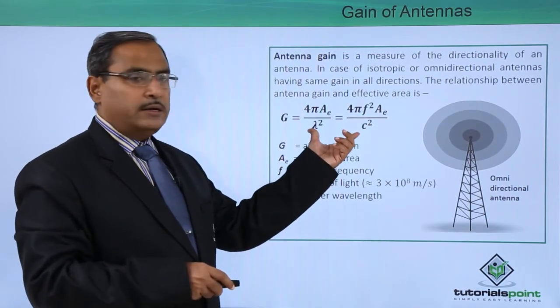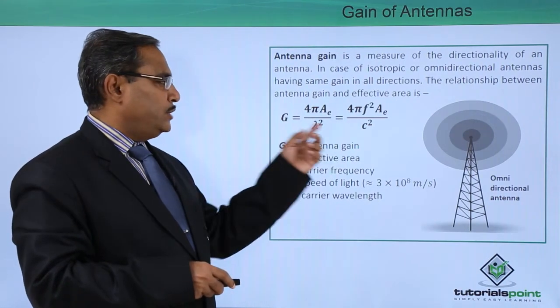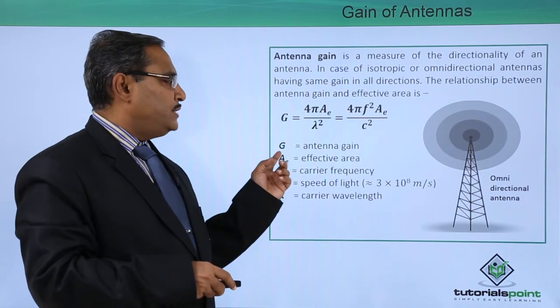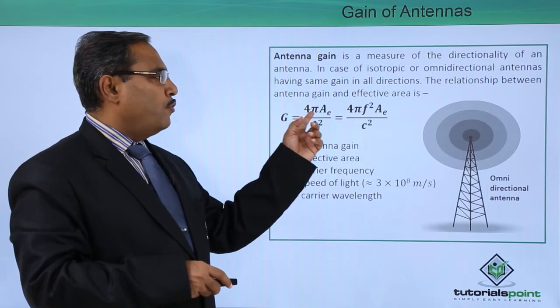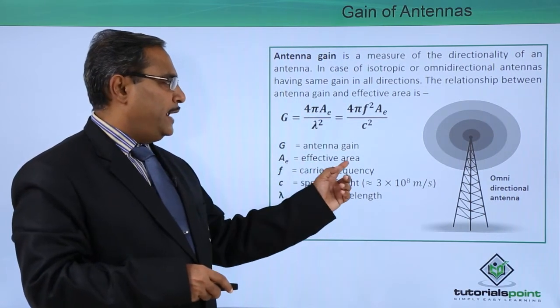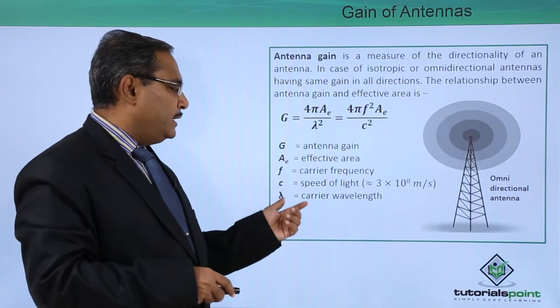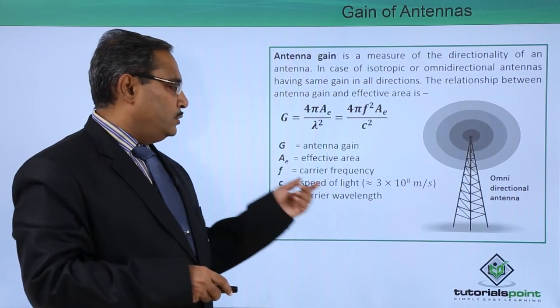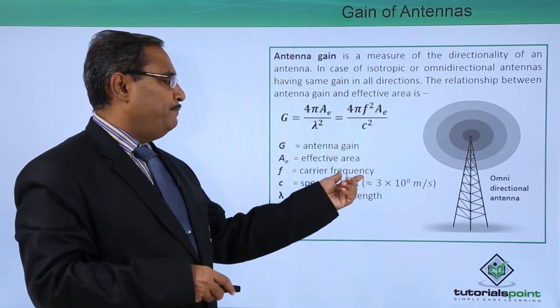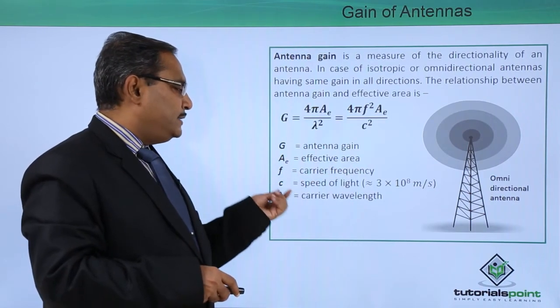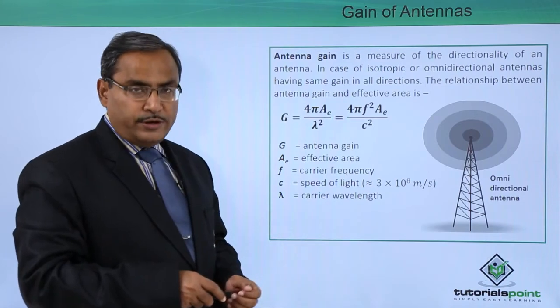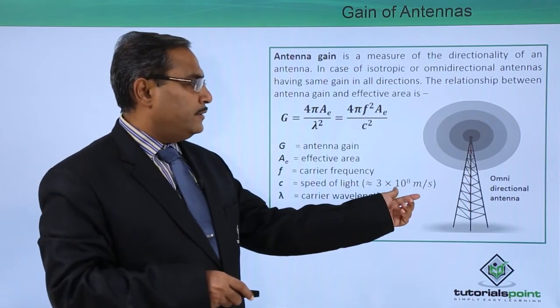Here is our very important expression: G, which stands for antenna gain, equals 4π Ae divided by lambda squared, where Ae is the effective area and lambda is the carrier wavelength. F denotes the carrier frequency, and C is the speed of light, which is 3 times 10 to the power of 8 meters per second.